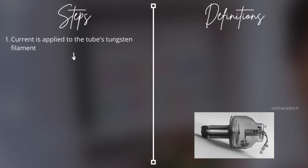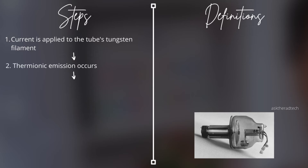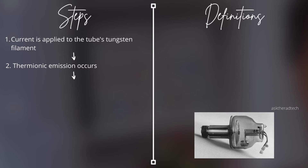Now let's get into the actual steps of x-ray production. Step one: current from the generator is applied to the cathode area and passes through the tungsten filament, heating it up. Step two: as the filament heats up, thermionic emission occurs. Thermionic emission refers to electrons being emitted from a surface — in this case the filament — when heat energy is applied. The word 'thermionic' breaks down into 'thermal' and 'ion,' meaning heat is applied to the metal.